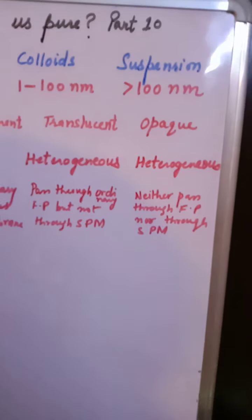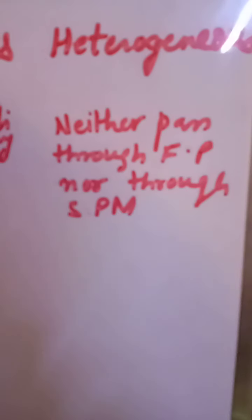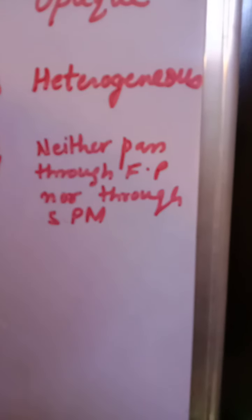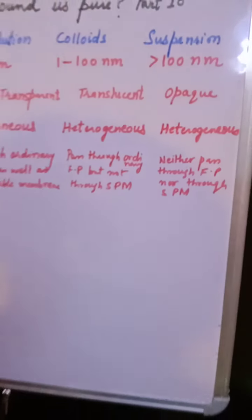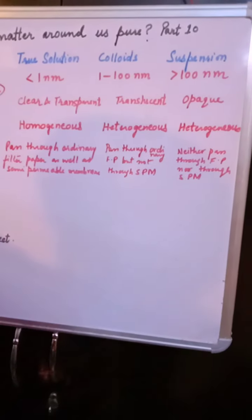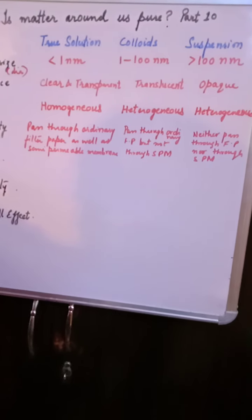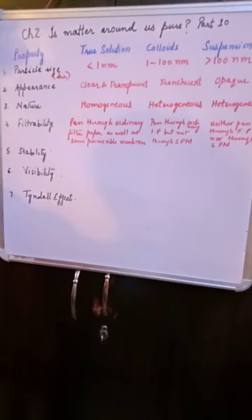Suspension particles neither pass through filter paper nor through a semi-permeable membrane — they are too large. So for suspension, you can use ordinary filter paper used in labs to separate the components of the mixture.